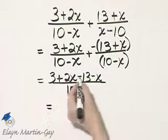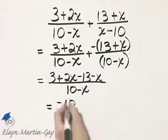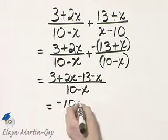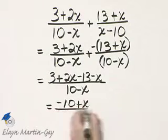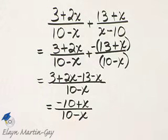Let's see, I have 3 minus 13, that's negative 10, and 2x minus x, that's plus x, over 10 minus x.